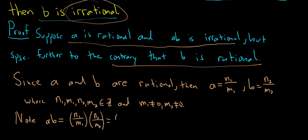This is N1 times N2, which is an integer because it's a product of integers, over M1 times M2, which is an integer, and M1 times M2 is not equal to zero. We know this because neither of the factors are zero, so they're both not zero, so the product is not zero.